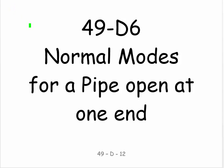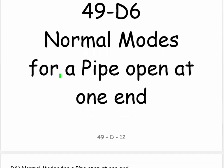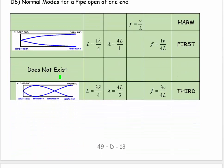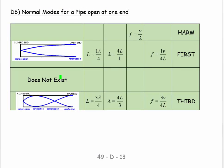Welcome, this is 49d6 and this is entitled normal modes for a pipe open at one end, not both ends but one end. This could be, for example, a recorder or a clarinet or a saxophone or something like this.